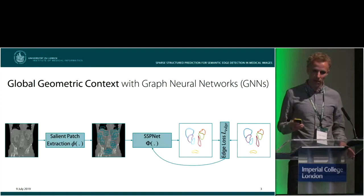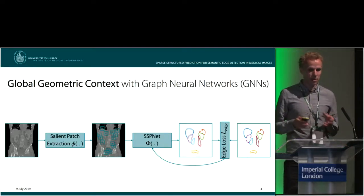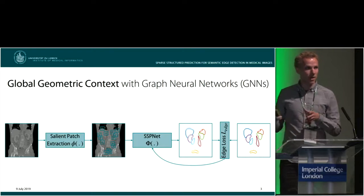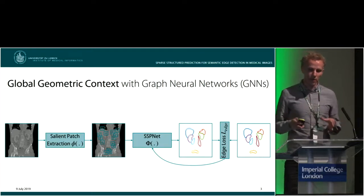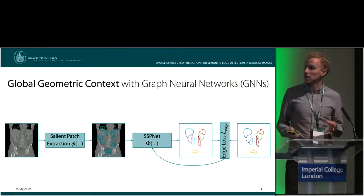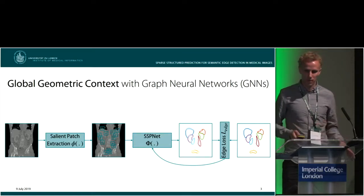Our sparse structured prediction net processes these image patches and outputs a dense semantic edge map. The whole training process is guided by a supervised loss on the ground truth edge maps.